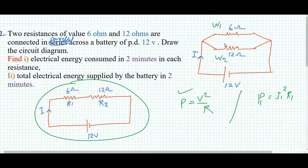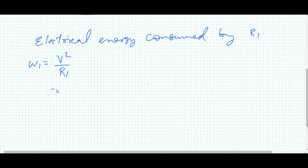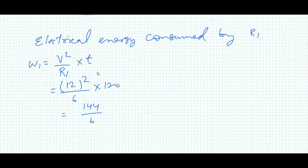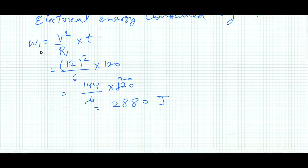In a parallel circuit, the voltage across both resistors is the same — across the 6 ohm and across the 12 ohm, the voltage is V, which means 12 volts here. So we apply the formula W1 equals V squared by R1 into T, which becomes 12 squared by 6 into 120. That is 144 by 6 into 120, and calculating this we obtain 2880 joules.